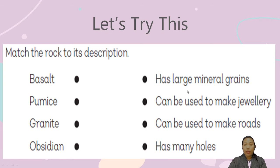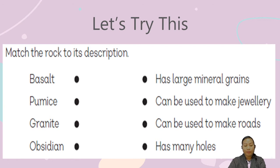The rocks to match are basalt, pumice, granite, and obsidian. Which igneous rock has large mineral grains? Which igneous rock can be used to make jewelry? Which igneous rock can be used to make roads? And which of these rocks has many holes — the porous kind of rock? Open your textbook to page 93.